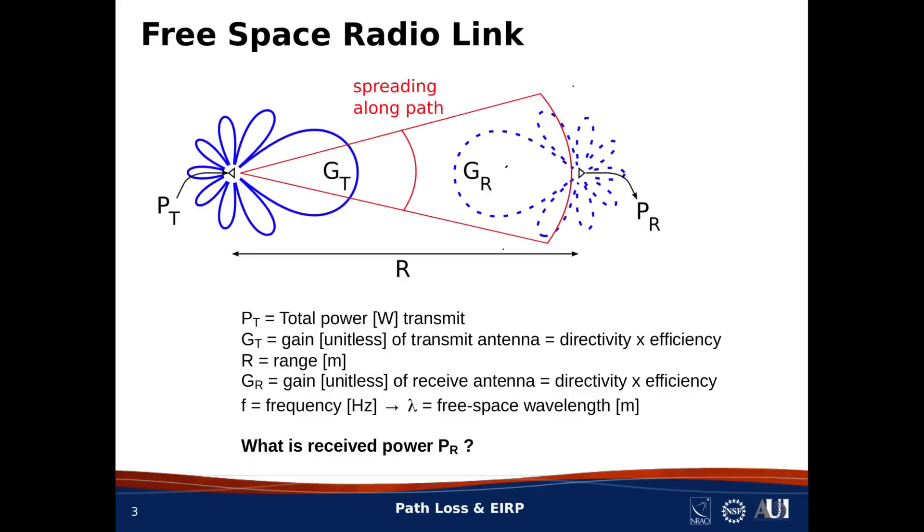Now, remember, gain is directivity times efficiency. So if an antenna loses some power before transmitting it, we've got that covered. Also, I say here that gain is unitless, but of course we can also describe antenna gain in units of dBi, simply by taking 10 times log 10 of the unitless quantity.